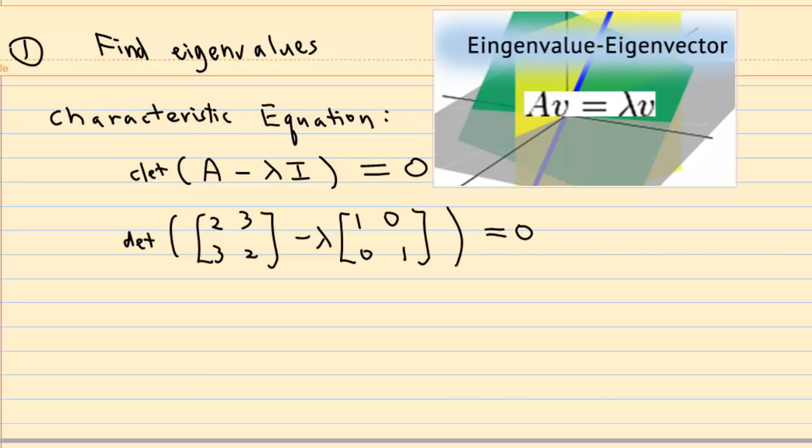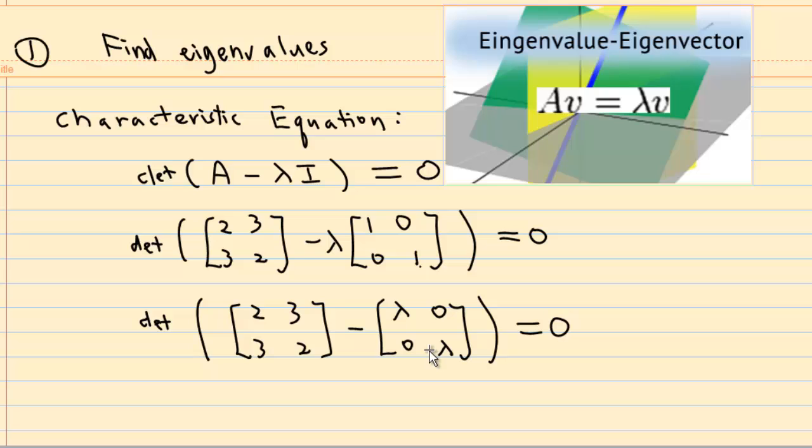A is a 2 by 2 matrix, and I is a 2 by 2 identity matrix. So lambda times identity matrix is the diagonal matrix lambda 0, 0, lambda.